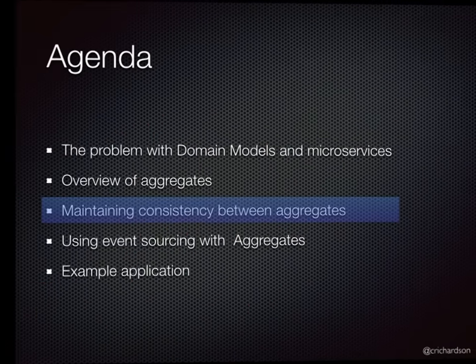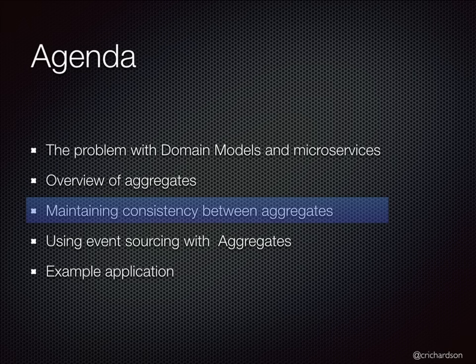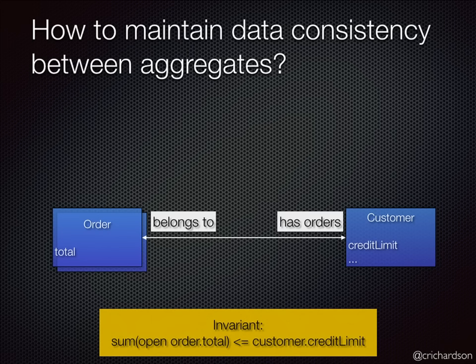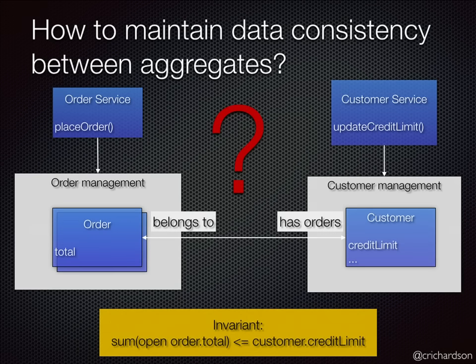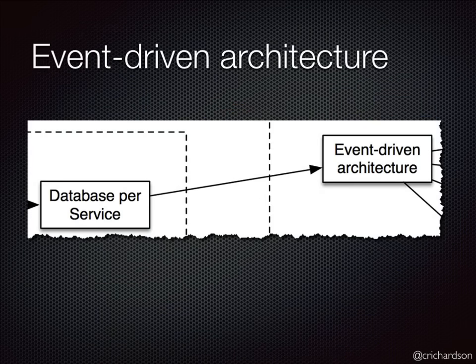To solve the consistency problem more generally, you have to use an alternative approach. Imagine orders and customers — customers have a credit limit and we need to always ensure it's never exceeded. If they're in the same database in a monolithic application, that's trivial. But if they're separate aggregates in separate services and you can't use two-phase commit, how do you maintain consistency and enforce that business rule? The solution is to use events.